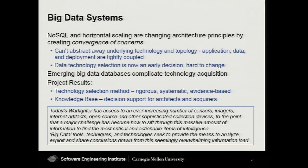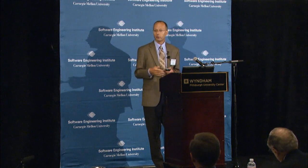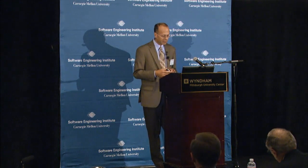These big data systems are built using NoSQL technology and horizontal scaling. With horizontal scaling, we take our processing and storage and spread it across a set of servers connected by network connections — and we're talking about tens to thousands of servers. Netflix, as an example, runs on a 2,000-plus server cluster for their database. So big scale.